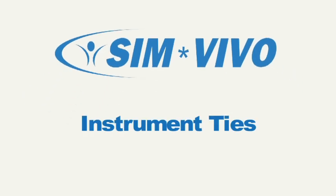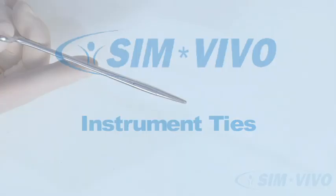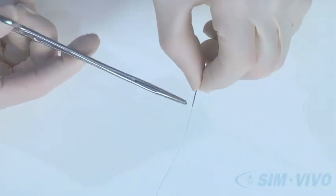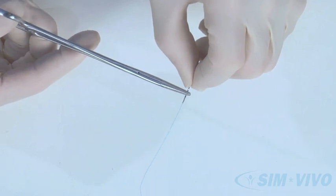For skin suturing, the best and most effective knot uses a technique called an instrument tie. In order to practice a tie, load a needle at a right angle and grasp it two-thirds of the way down.